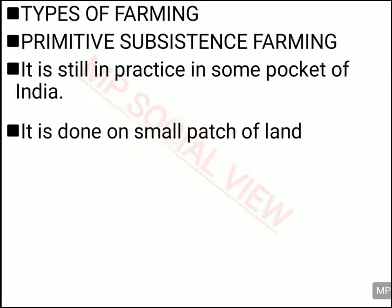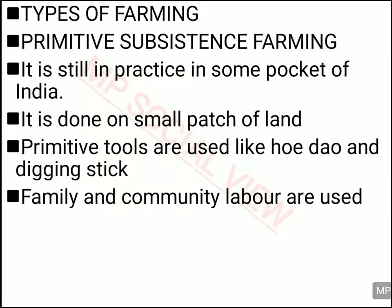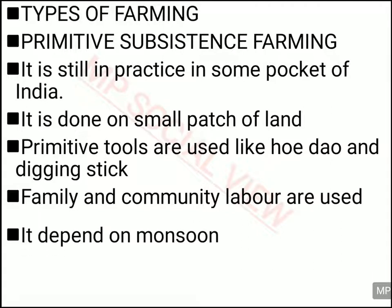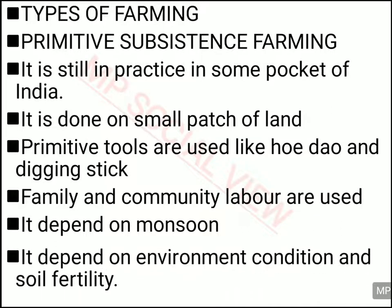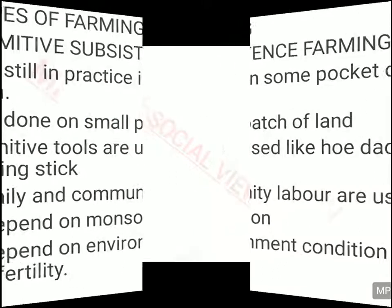The first and foremost type is primitive subsistence farming. This is actually the oldest way of farming and is still practiced in some parts of our country. It is done on a small piece of land with primitive tools, and family labor or community labor is sufficient. It is mainly dependent on monsoon for irrigation and on the fertility of the soil. This type of agriculture is also called slash and burn agriculture or shifting agriculture.